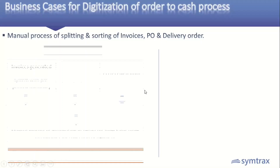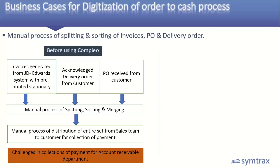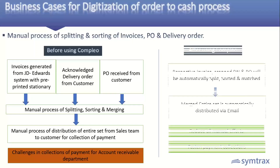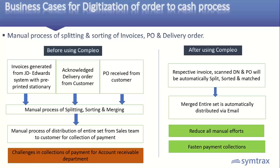Let's discuss a business case from the manufacturing industry. This customer is from Oman and we helped them digitize their existing order-to-cash process. Previously, they had to manually merge delivery orders and purchase orders received from customers, which was causing challenges for their finance department in payment collection. Using Compleo, we helped them entirely merge the invoice, delivery order, and purchase order, and send them over email to the customer — reducing manual efforts and accelerating their payment cycle.